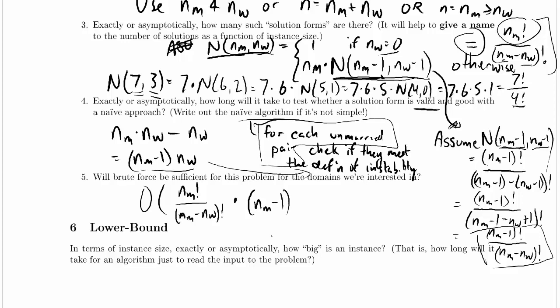NM minus 1 times NW. This is asymptotic, so we could probably just drop that minus 1. We might be able to drop some other things, too. But bottom line, this is potentially really big.